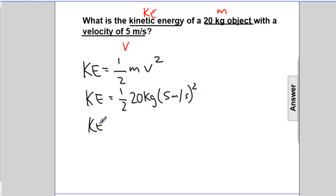Rewriting, it's one-half times 20 kg times 25. Five squared is 25.